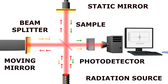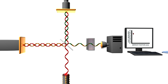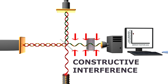The other part of the radiation reflected by the mirrors goes back to the radiation source. Currently, both mirrors are set at an equal distance from the splitter, and this causes the two beams reaching the detector to be in the same phase. That's what we call constructive interference.